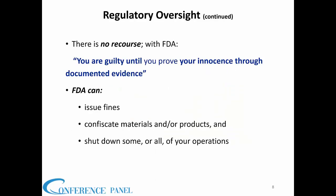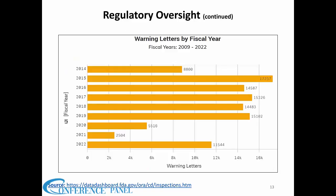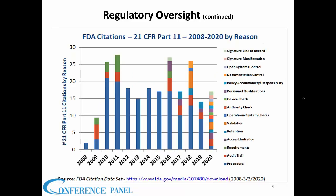With FDA, there's no recourse. You may be innocent until proven guilty in a U.S. court of law, but you're guilty until you prove your innocence through your documented evidence in FDA world. Now this covers software and computer warning letters — warning letters by fiscal year — and recall events. This is an important slide because it deals directly with 21 CFR Part 11.